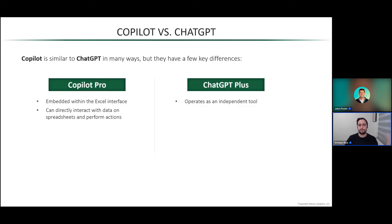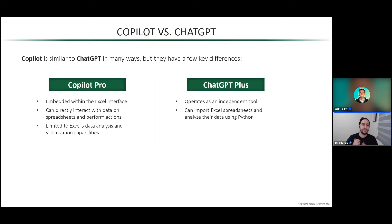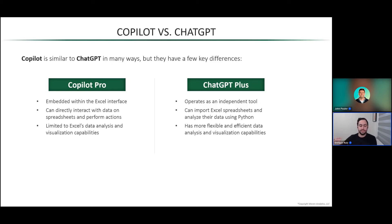ChatGPT can import Excel spreadsheets and use advanced analytics to analyze that data — most of the time it uses Python — and can perform some slightly higher and more advanced analytics. The limitation to Copilot being embedded directly in Excel is that it is limited to Excel's existing data analysis and visualization capabilities. So Copilot can't do anything that you wouldn't have been able to do in Excel yourself, which is a key distinction. ChatGPT has more flexible capabilities because it can use Python on the back end.